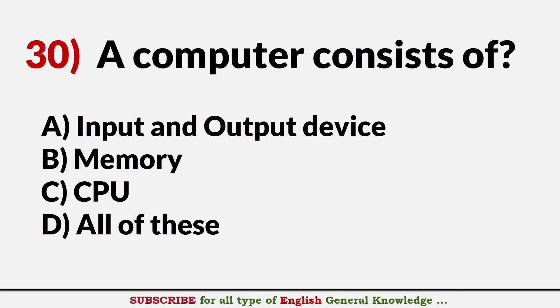A computer consists of? Answer D. All of these: input and output device, memory and CPU.